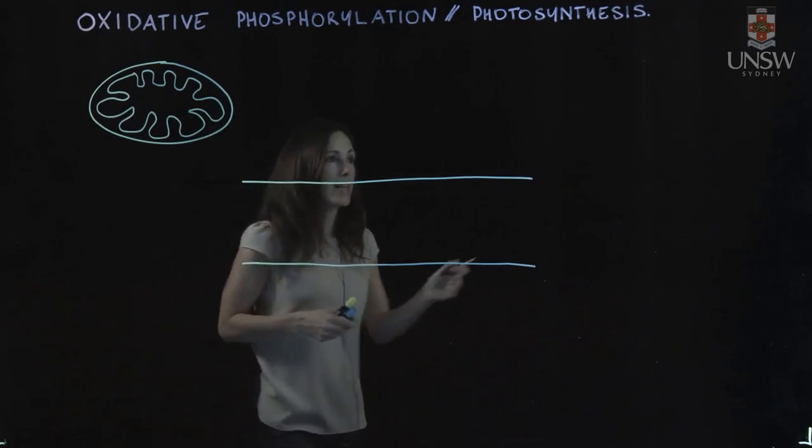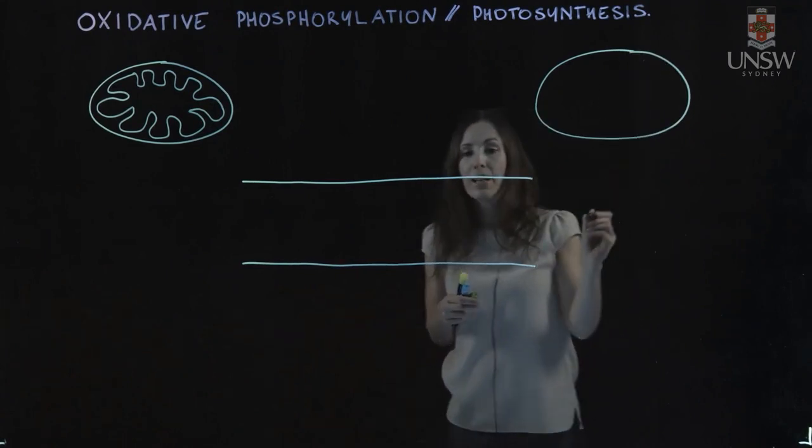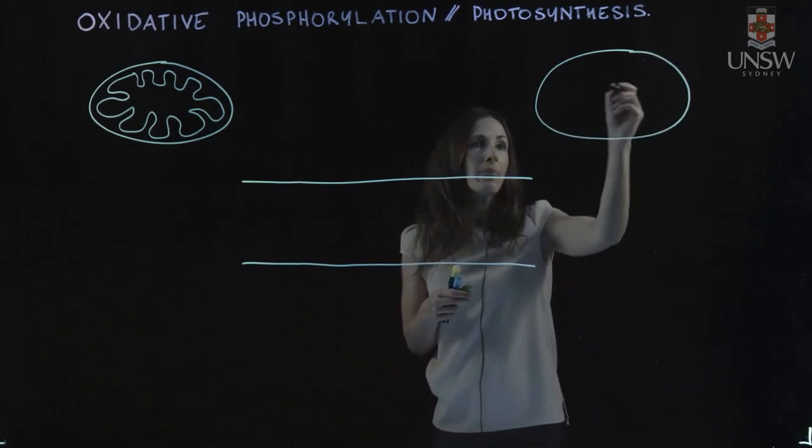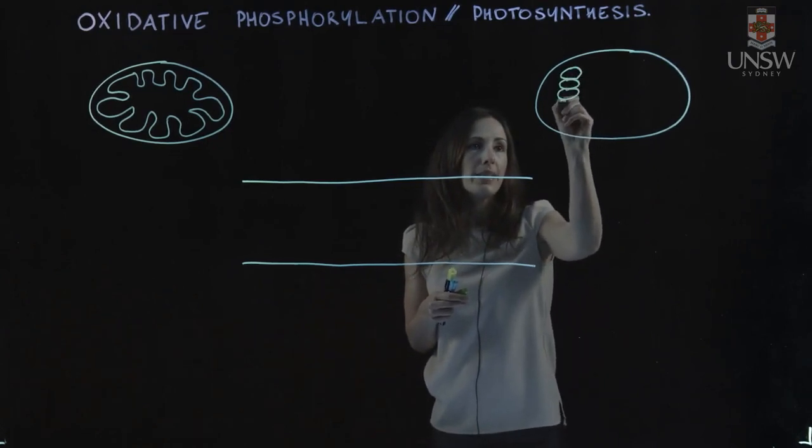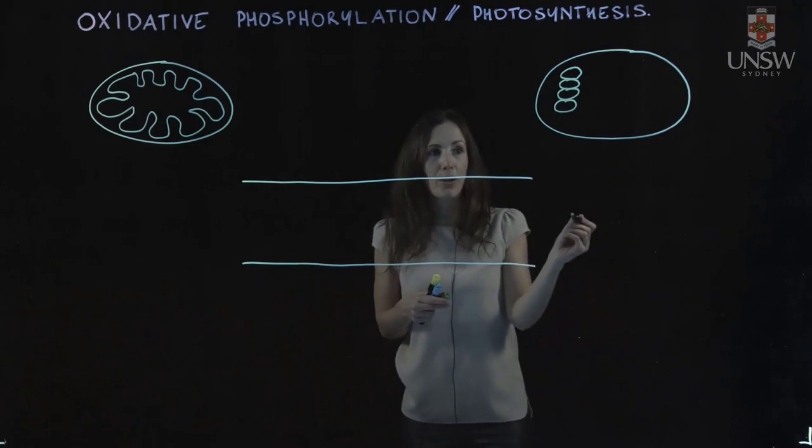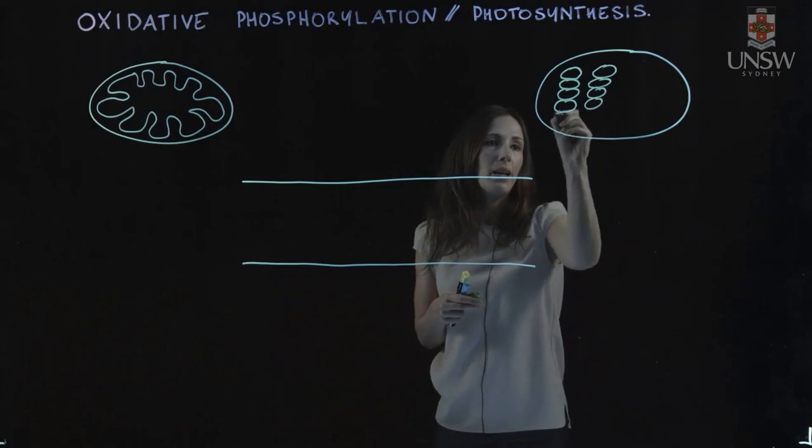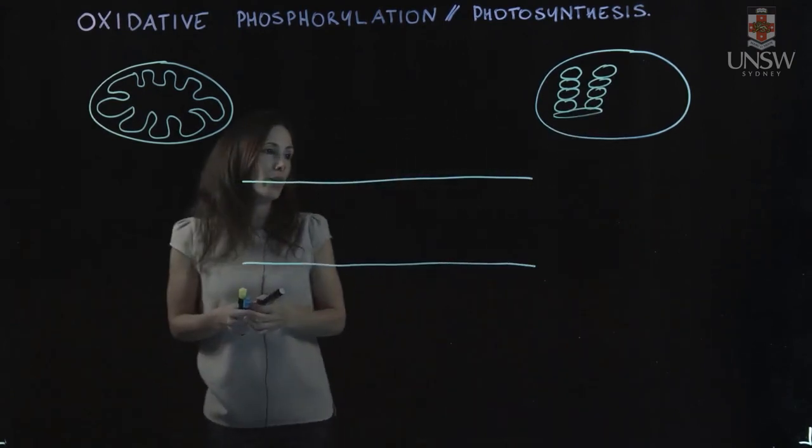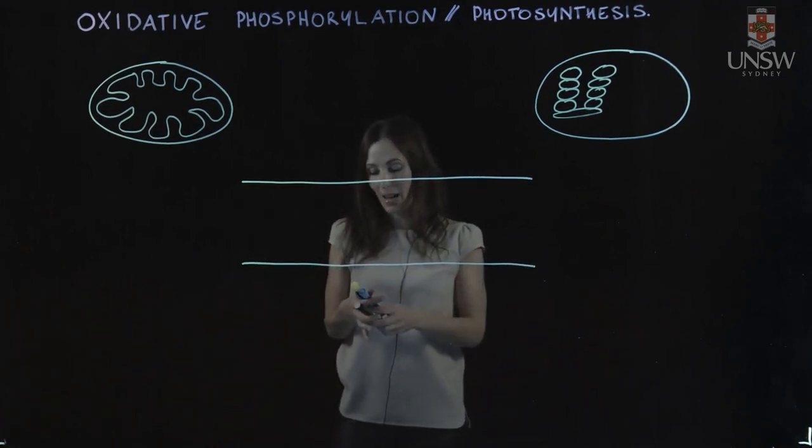In photosynthesis, we have a different organelle that's involved in creation of ATP, and that's a chloroplast. Chloroplasts have this membrane, and then we have thylakoid membranes where our ATP generation occurs, and these are in these stacks called grana, and they can be interlinked together. So those are the two organelles that we're looking at, these processes of ATP synthesis occurring.